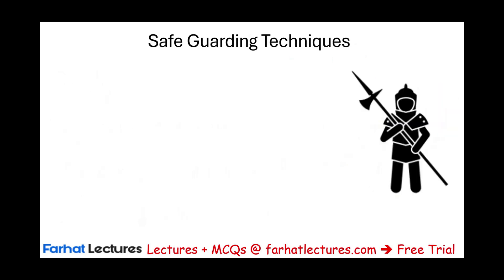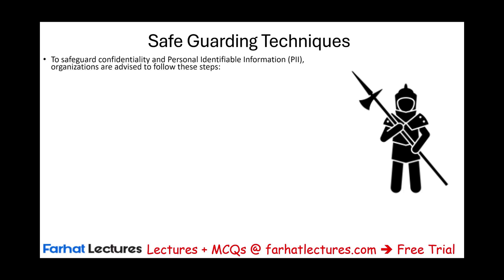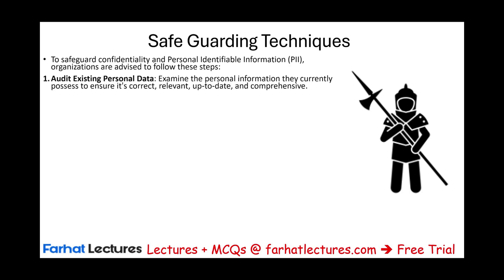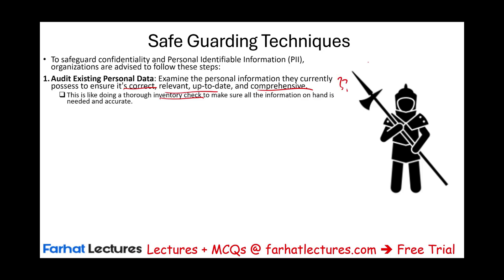To safeguard confidentiality and PII, organizations are advised to follow these steps — not a complete list, but a few key tips. First, audit existing personal data: examine the personal information you currently have to ensure it is correct, relevant, up to date, and comprehensive. This is like doing a thorough inventory check to make sure all information on hand is actually needed. If you don't need it, get rid of it.